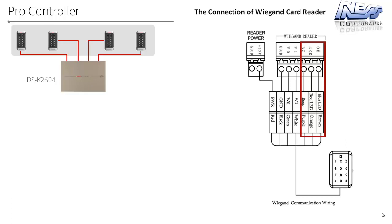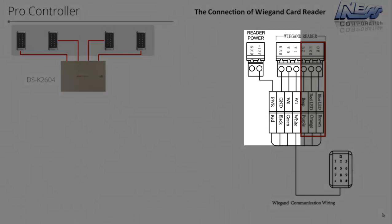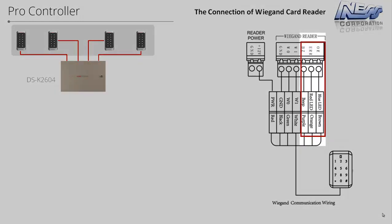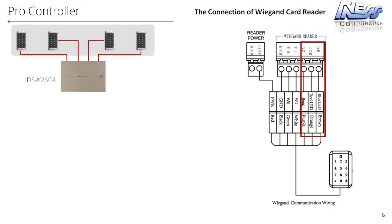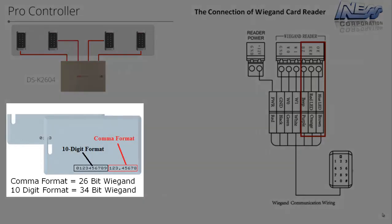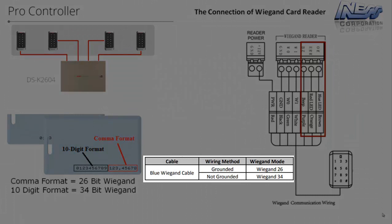When connecting Wiegand card readers to the controller it is a 4-wire connection: power, W0, and W1 for data. In addition, there are 3 other wires — a buzzer wire to control the beeper on the card reader, plus red and blue LED wires fully controlled from the controller's OK and error outputs. So if someone badges a card and is denied access, the reader can give 3 beeps. The controller also supports 26-bit and 34-bit Wiegand. On the readers there is a blue wire: connected to ground, it outputs 26-bit Wiegand; not connected, it outputs 34-bit Wiegand.